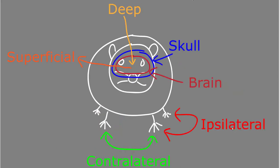Next up are the terms ipsilateral and contralateral. Ipsilateral means on the same side of the body, and contralateral means on the opposite side of the body. For example, the left forelimb is ipsilateral to the left hindlimb, whereas the left forelimb and the right forelimb are contralateral from each other — they're on opposite sides of the body.